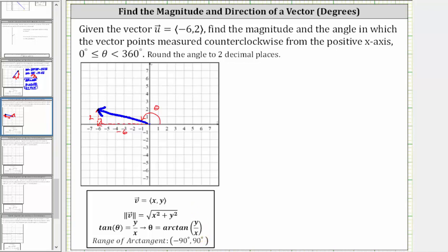Let's begin by determining the magnitude, which is indicated either using single or double vertical bars. Using double vertical bars, we have the magnitude of vector u is equal to the square root of the quantity the square of negative six plus the square of two, which is equal to the square root of the quantity 36 plus four, and therefore the magnitude of vector u is equal to the square root of 40.